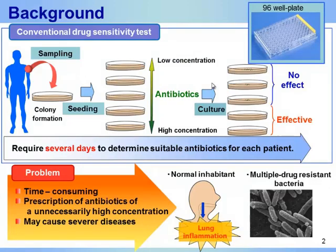Antibiotics are effective for the treatment of infectious diseases. However, the effective range of diseases is limited for antibiotics. The drug sensitivity test has been conducted to choose the most effective antibiotic for each patient using 96-well plates. The blood or saliva is sampled from a patient and the bacteria are cultured on a well plate about a week until colonies are formed. But the sample volume is limited and the number of pathogenic bacteria contained in the sample is usually very small.